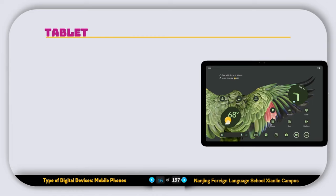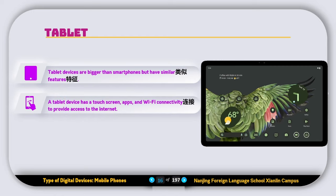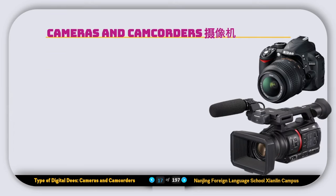The next device is called the tablet. Tablet devices are bigger than smartphones but have similar features. A tablet device has a touch screen, apps, and Wi-Fi connectivity to provide access to the internet. Some tablets contain SIM card slots for internet access when Wi-Fi is not available.